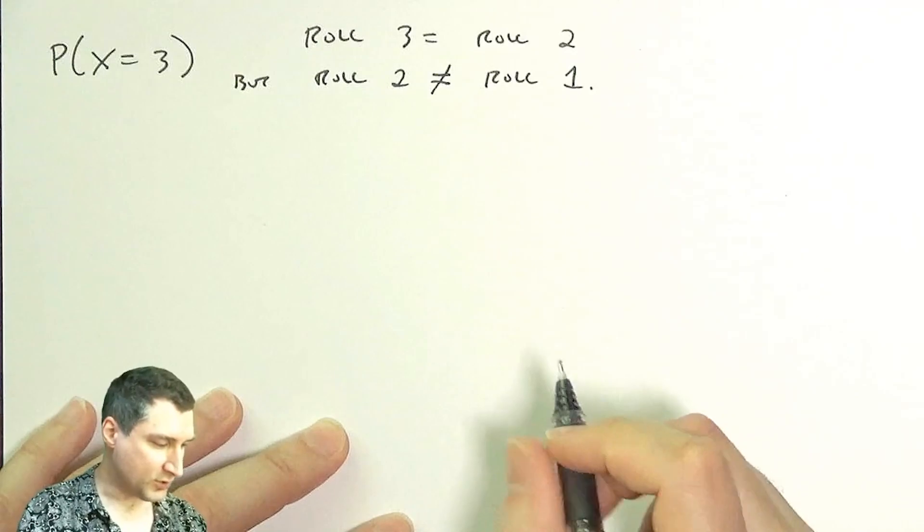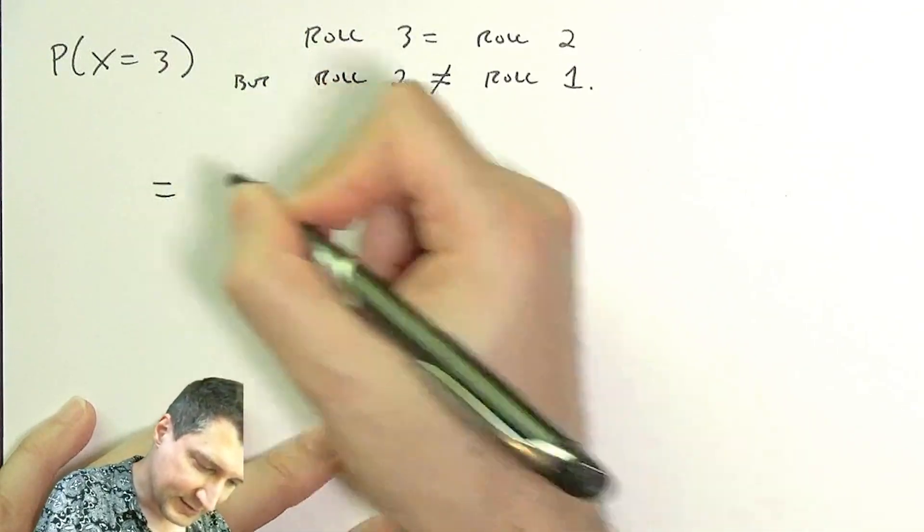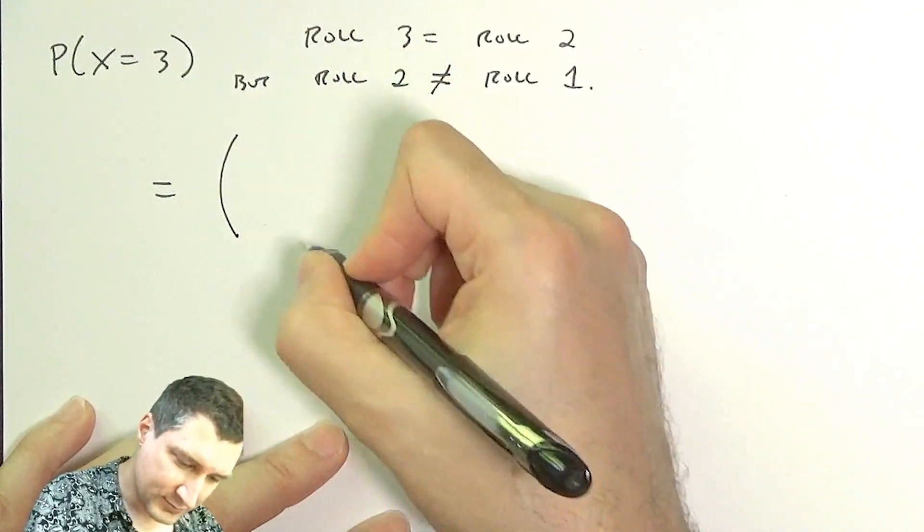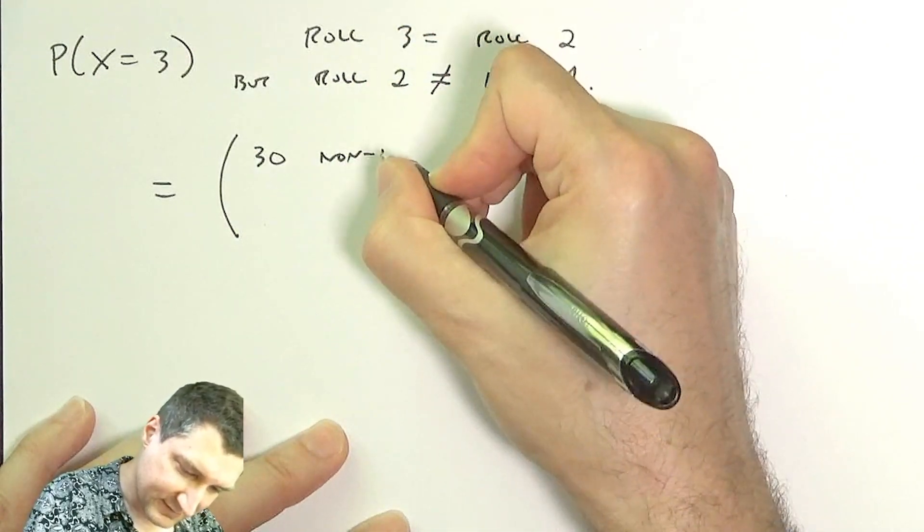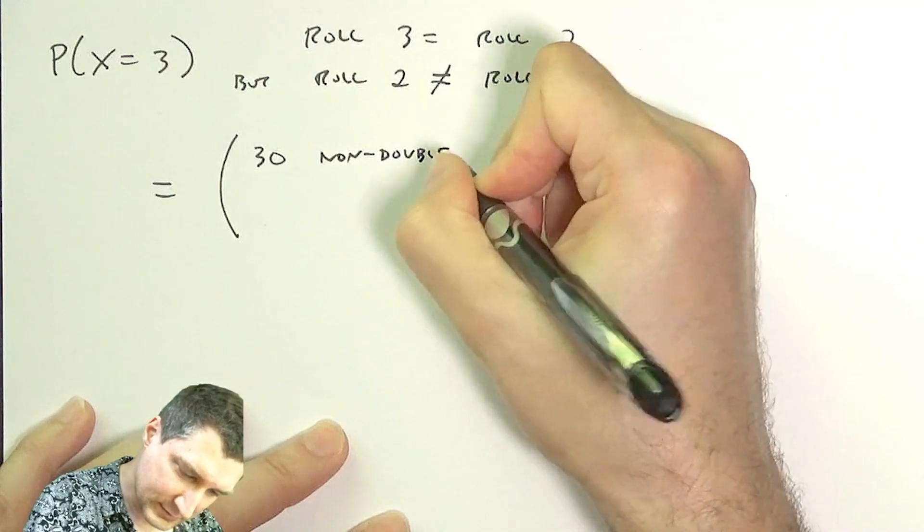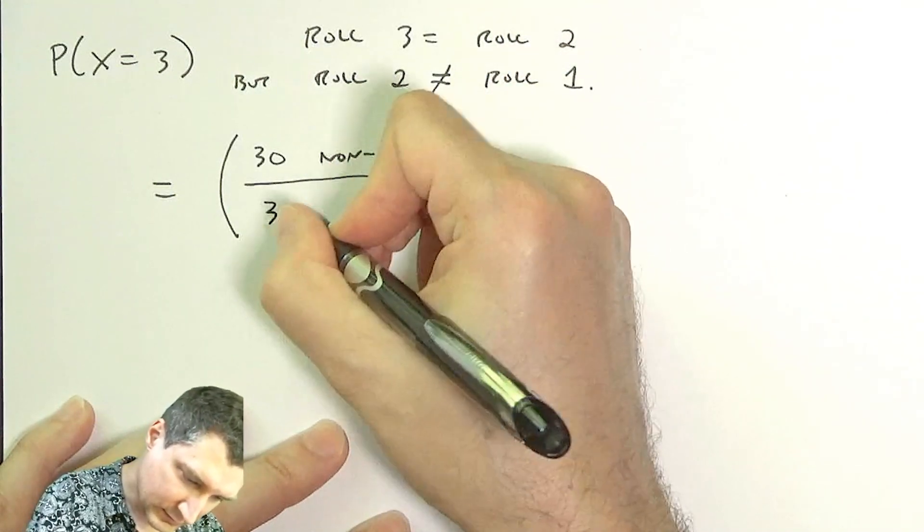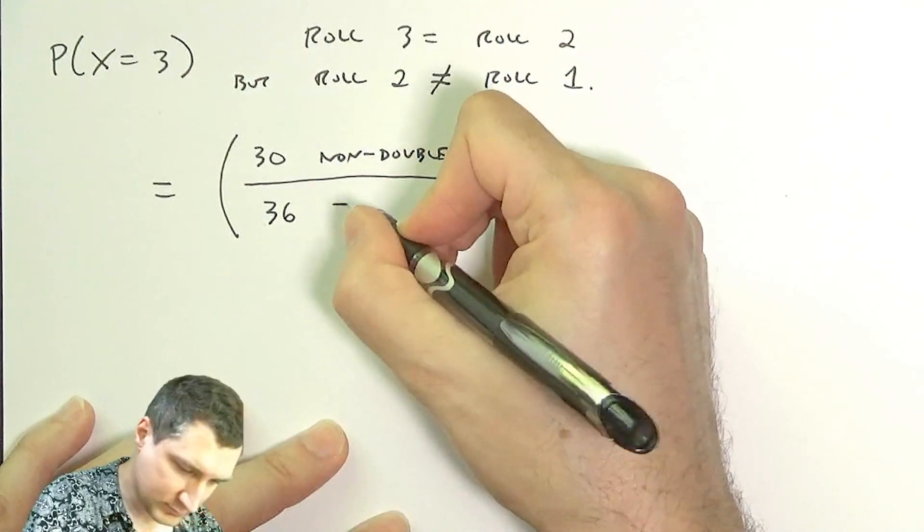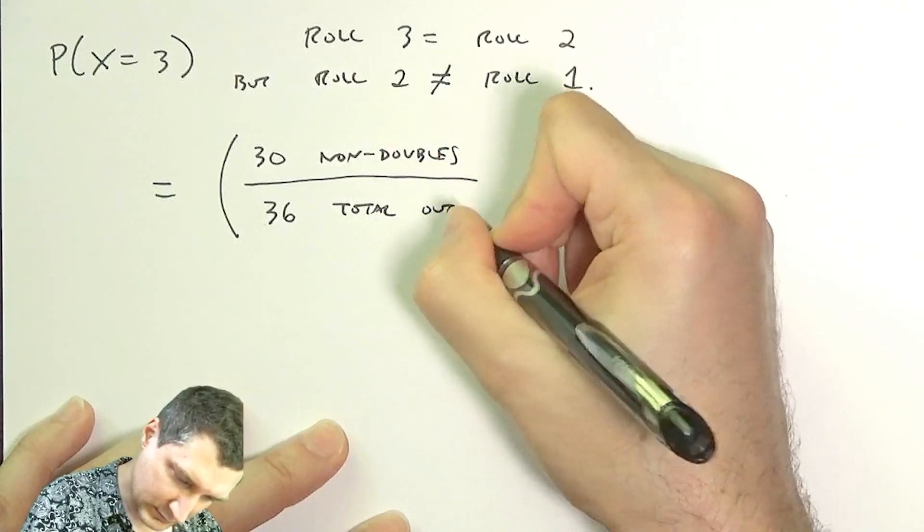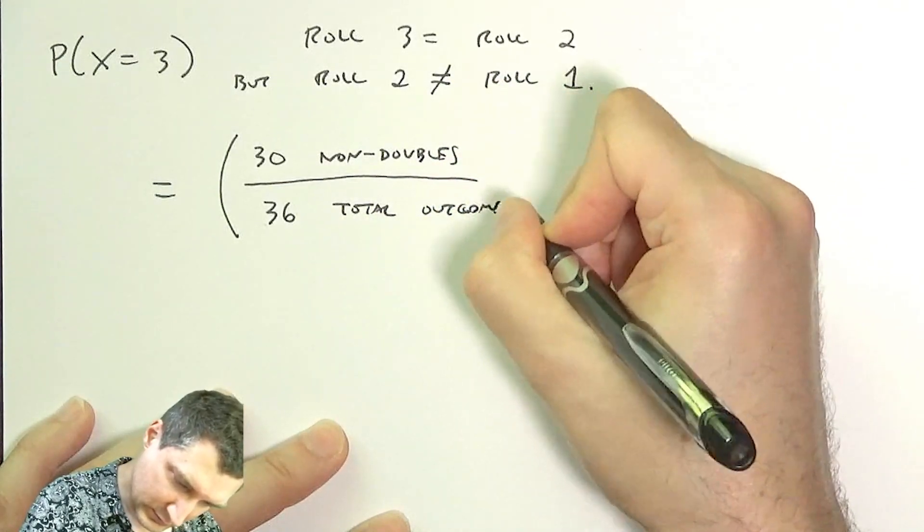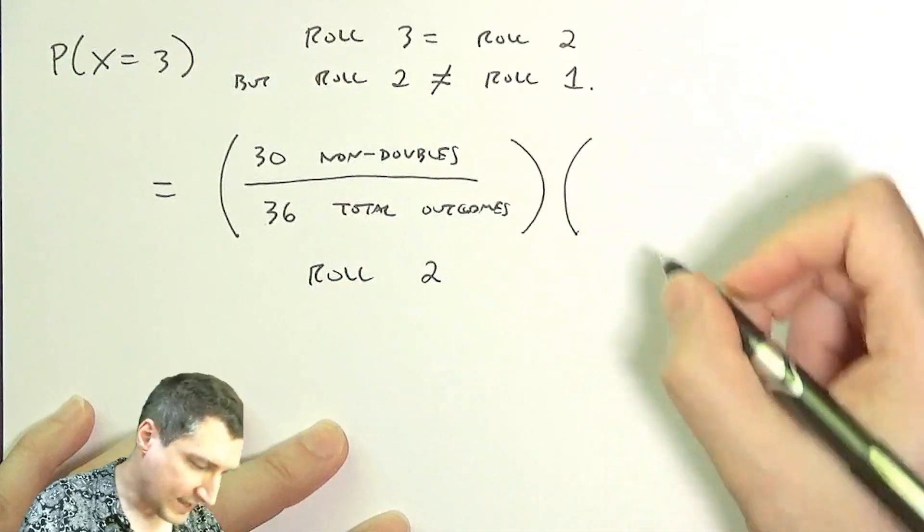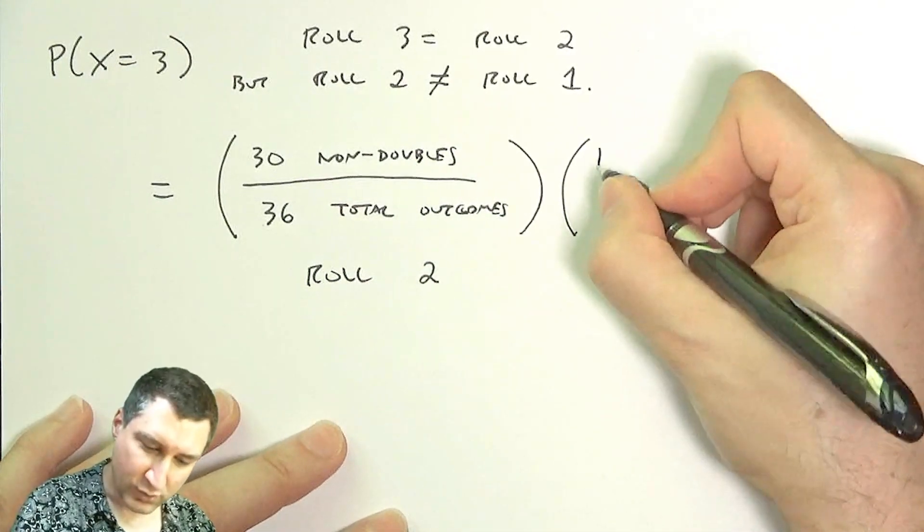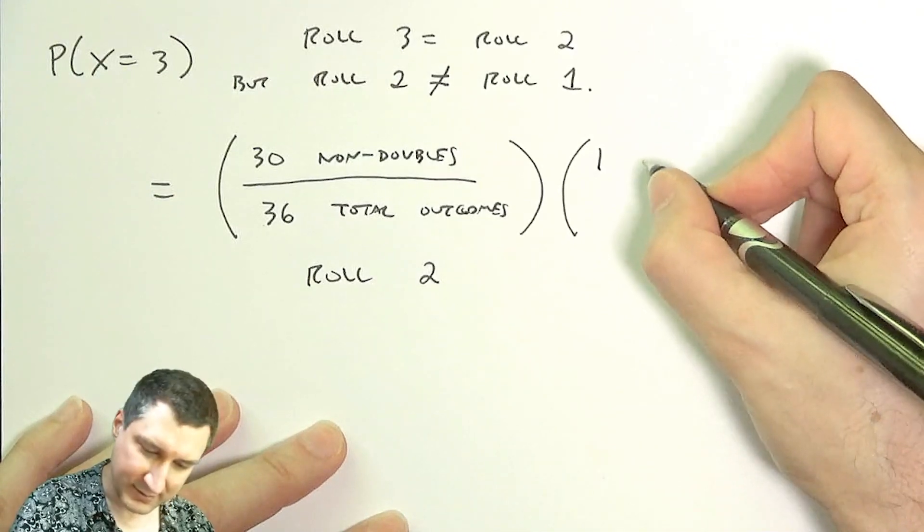What's this probability? Well, this is like saying that on roll 2 I got 30 bad outcomes. This is what happened on roll 2.